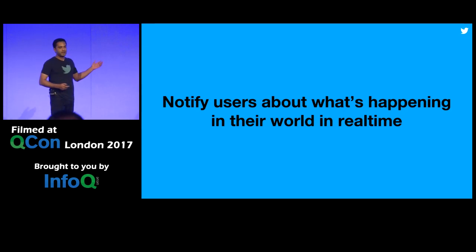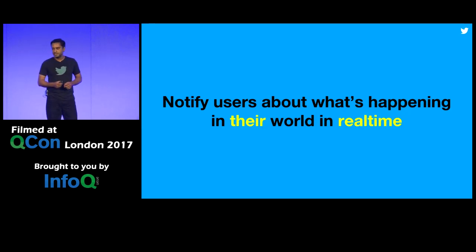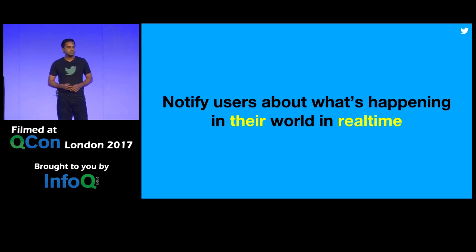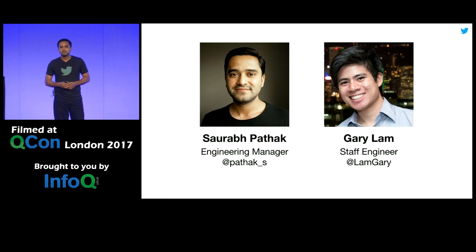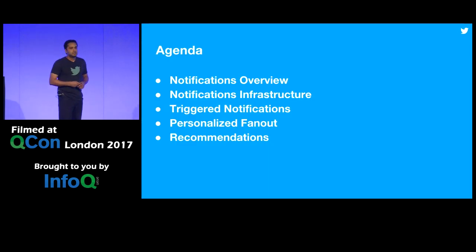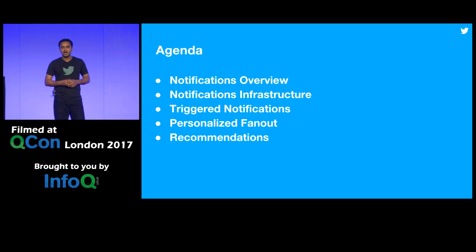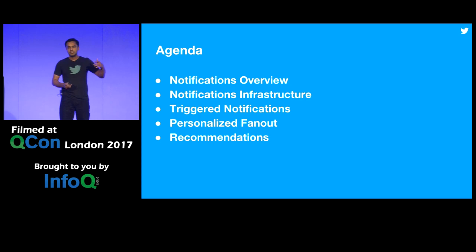We enable these use cases by notifying users about what's happening in their world in real-time. The key phrase is 'their world in real-time,' and during the talk today we'll focus on why both are important. My name is Saurabh Pathak, I manage the notifications team at Twitter. I'm here with Gary Lam, the lead engineer on my team. We'll give a high-level overview of notifications, discuss main scaling challenges, go over our infrastructure, the evolution of notifications, covering three categories: triggered notifications, personalized fanout, and recommendations.